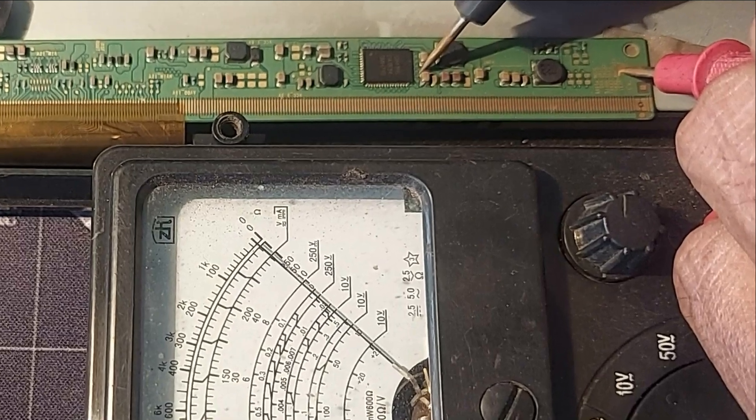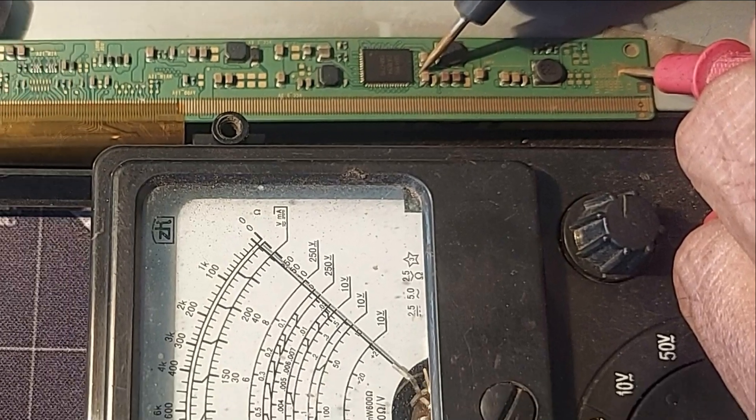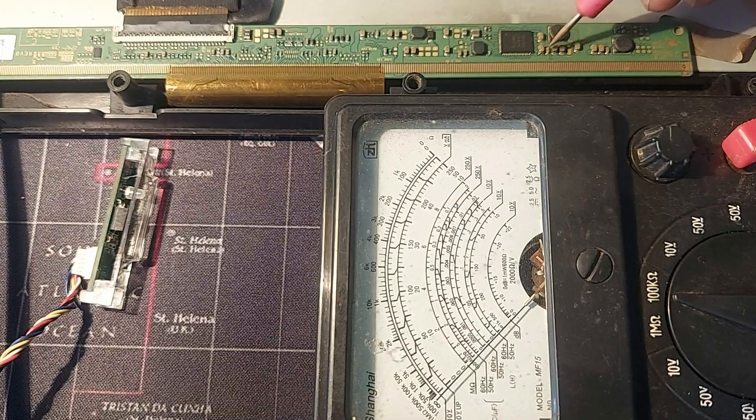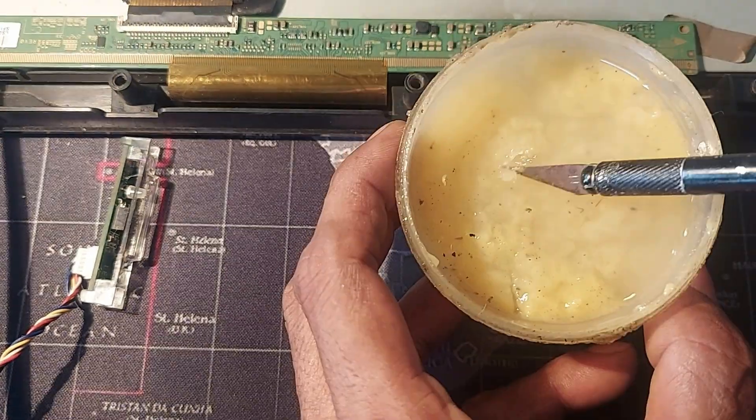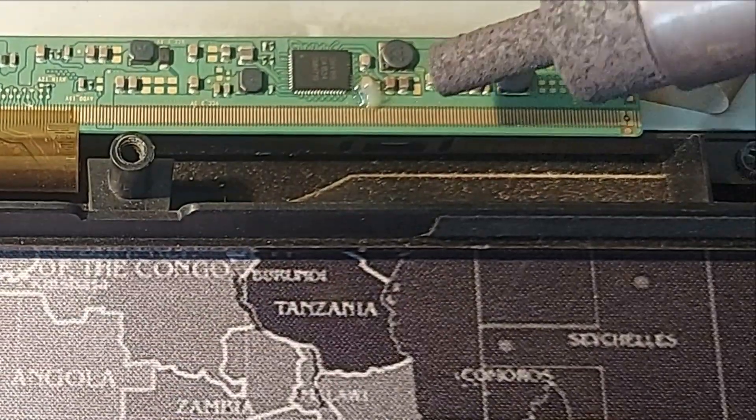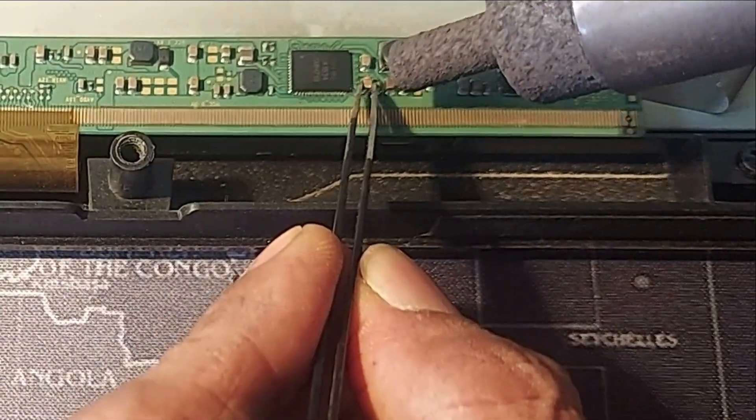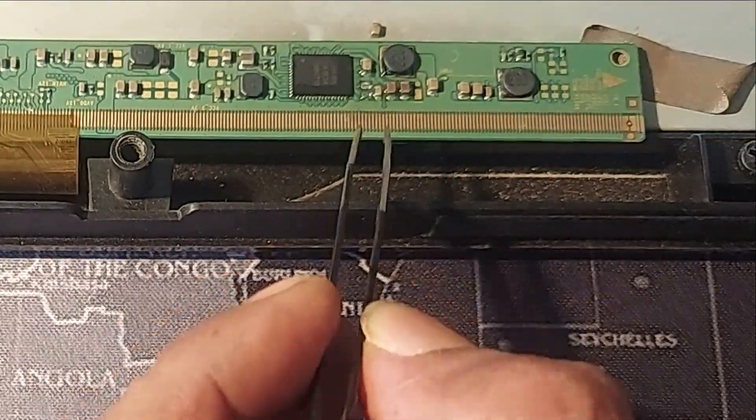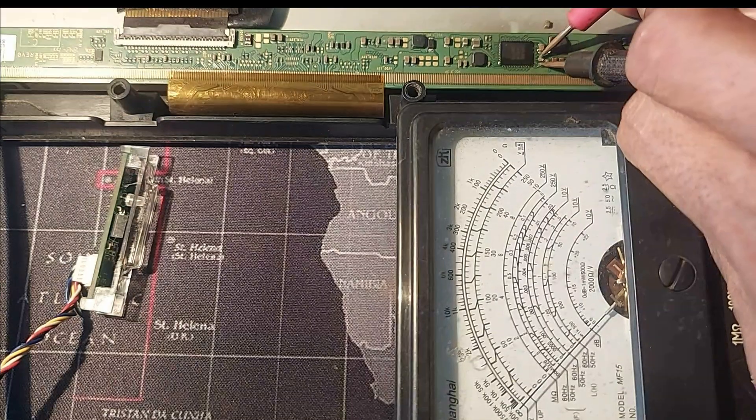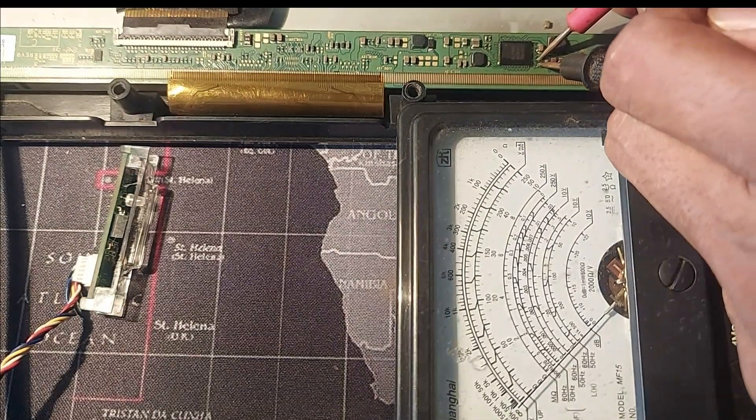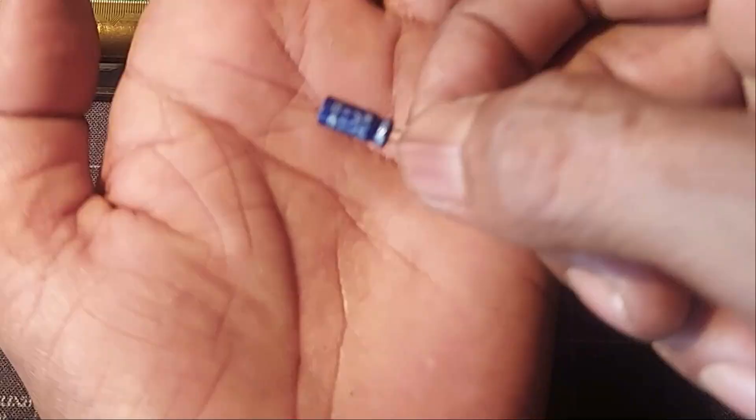A short circuit of 10 ohms is found from pin 31 to the ground. So now these two filter capacitors should be opened. Well, before opening another one, let's measure first. Okay, no more short circuit here, so I am connecting a 3.3 microfarad capacitor.